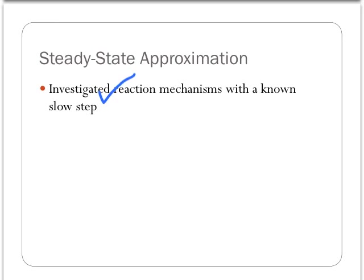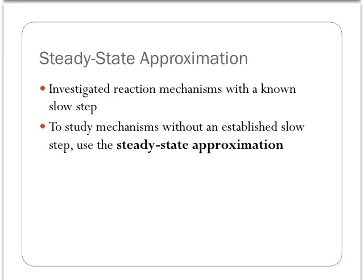To this point in kinetics and our consideration of reactions, we have looked at the process of looking at reaction mechanisms that have a known slow step. We know that the first or second or third step, whatever it might be within the series of elementary steps, is the rate determining or slow step. Well, what do we do in the case that we don't have a known slow step?